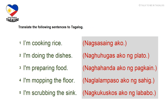Let's now check your answers. Number 1, I'm cooking rice — Nagsasaing ako. Number 2, I'm doing the dishes — Naghuhugas ako ng plato. Number 3, I'm preparing food — Naghahanda ako ng pagkain. Number 4, I'm mopping the floor — Naglalampaso ako ng sahig. Number 5, I'm scrubbing the sink — Nagkukuskos ako ng lababo.